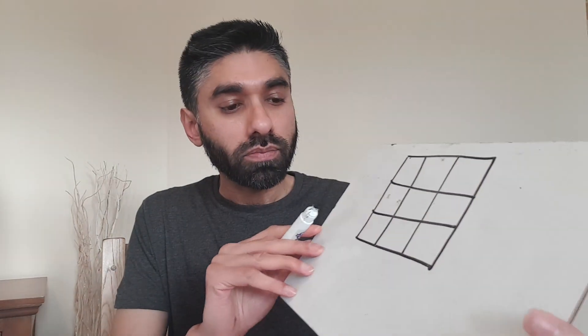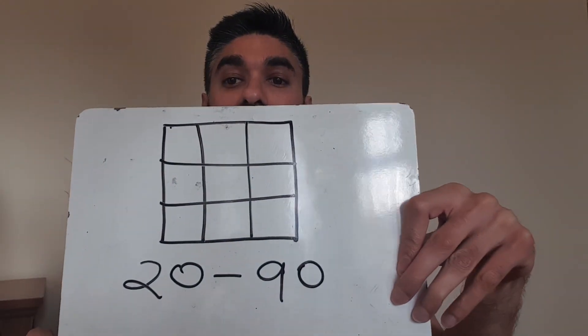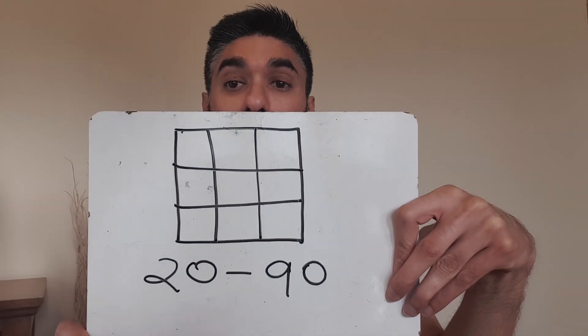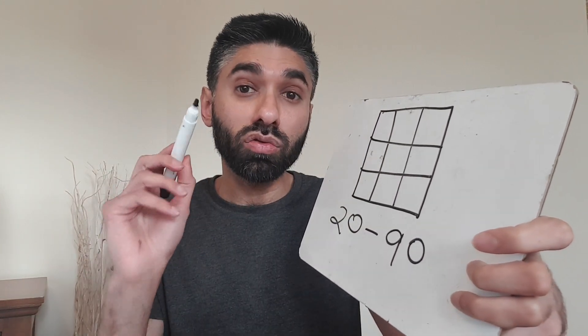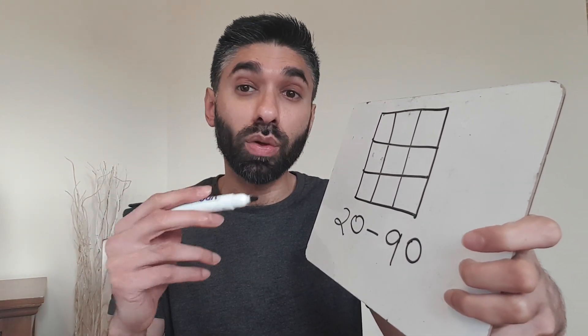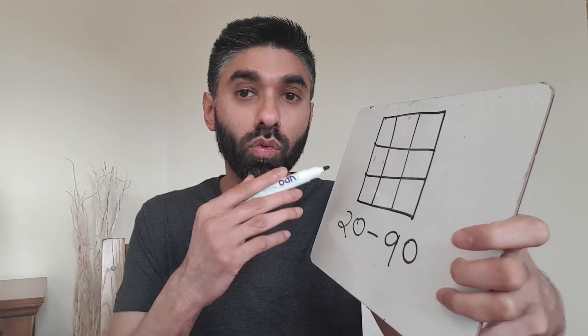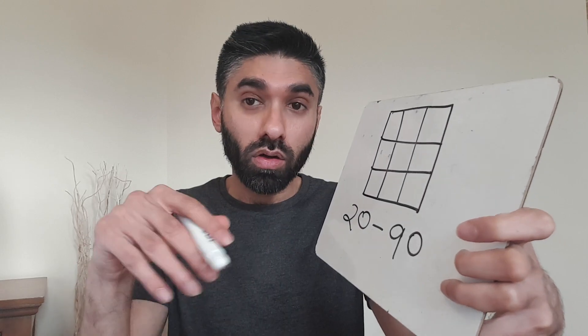Did you use a pencil and ruler to draw your grid? You usually get told off in school by your teacher if you don't use pencil and ruler to draw shapes in your book. Today I'll make an excuse - you don't need to. Now I want you to place numbers between 20 and 90 in the grid. You can include 20 and 90, and you can only use each number once.